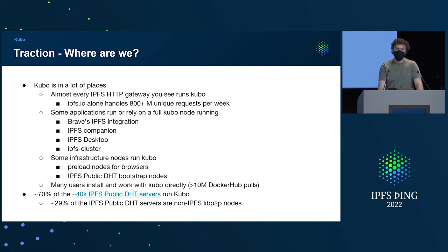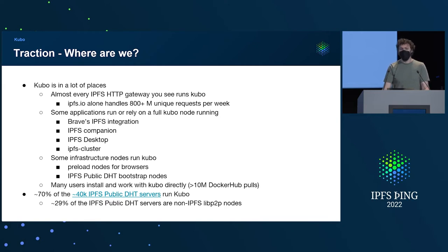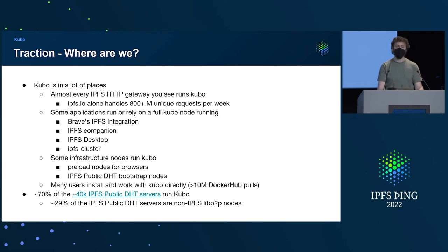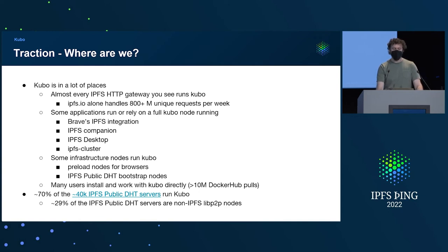Kubo is in a lot of places, and most of the places that you will find IPFS things, there is a Kubo thing nearby. The HTTP gateways that most of you have used are backed by Kubo. There are new implementations that exist already with other sorts of backing nodes, but for the most part this is Kubo. There are others that embed Kubo in some way, including Brave, IPFS Cluster, Desktop, and Companion. There are also common infrastructure nodes — like public DHT bootstrapper nodes and preload nodes — that help stress test it.